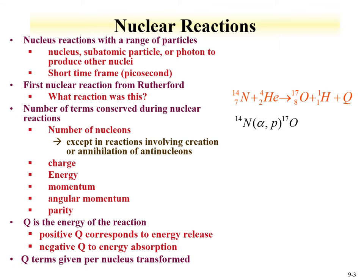Nuclear reactions are defined as reactions involving a range of particles — a nucleus, a subatomic particle, or a photon — to produce other nuclei, fundamentally changing a target into a new daughter or reactant. These reactions occur in very short time frames, on the order of picoseconds. The first nuclear reaction, as discussed early in the class, is from Rutherford, where alpha particles impinging on nitrogen form oxygen and a proton.